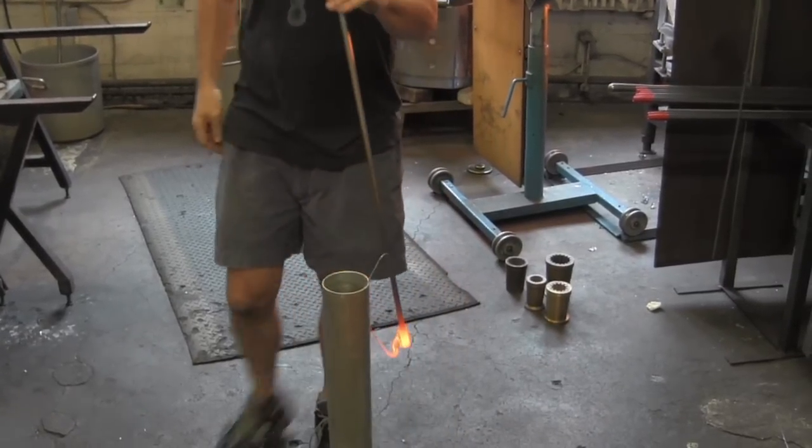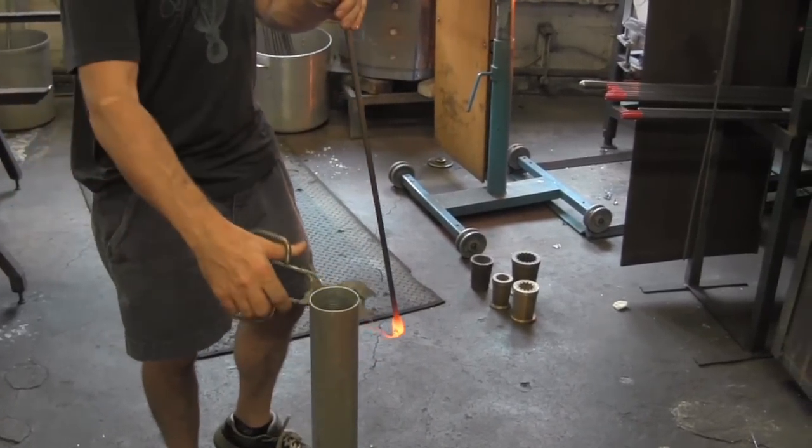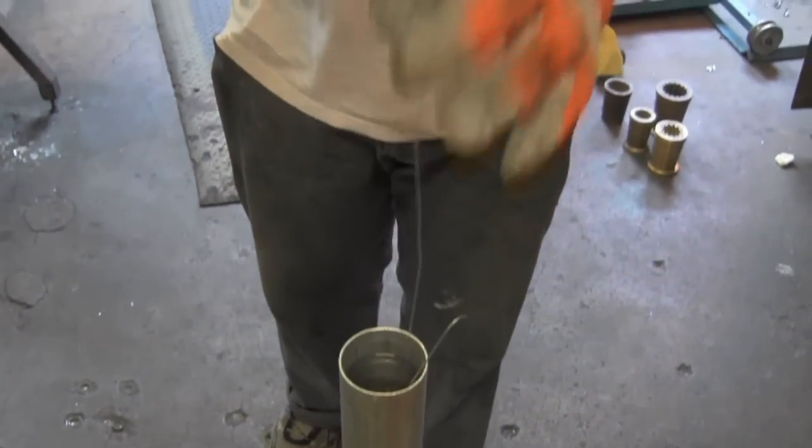We can illustrate this principle with a Prince Rupert's drop, where we take a gob of molten glass and quench it in water.